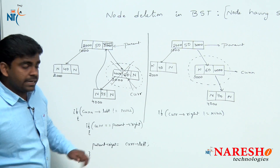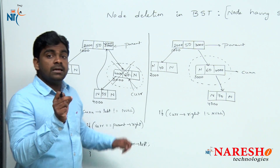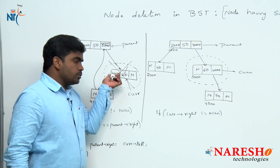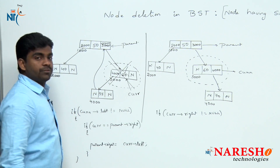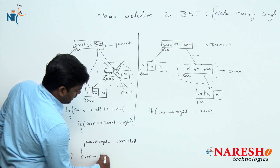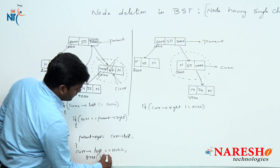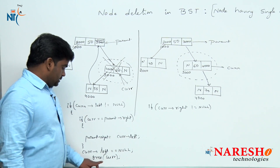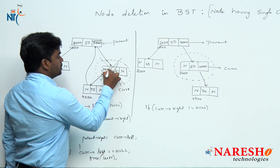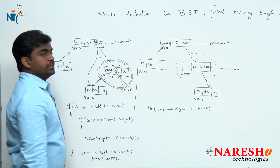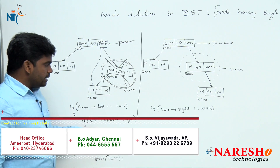Then finally, how we should make it free? In place of 4000 we have to place null value. Current->left equals to null - here we are placing null value, then it stops pointing. Then we can free this node. Now no more pointing to this node - and the same story applies here.